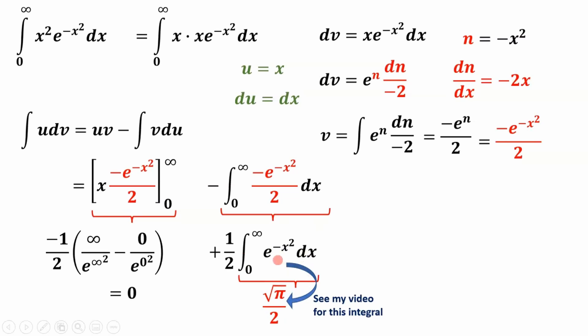It's root pi over 2. So that means this whole thing, root pi over 2 times this one half is root pi over 4. And that's our integral. So the integral of x squared times e to the negative x squared from 0 to infinity is root pi over 4. Good luck on your midterms, final exams. Hope you got some value from this video. And I'll see you in the next one. Cheers.